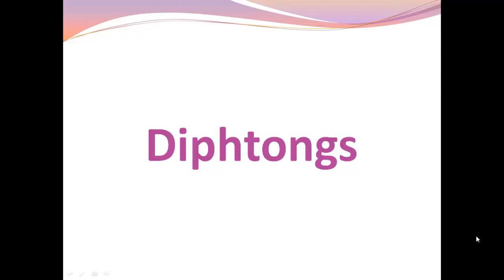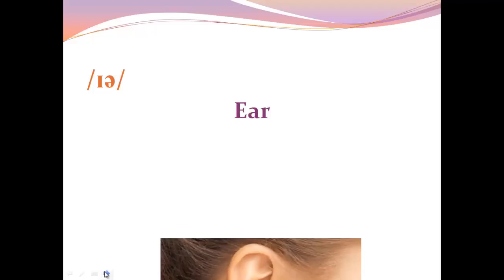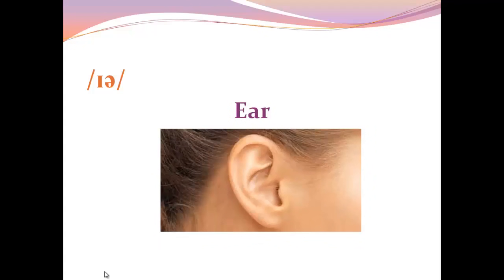Hi everyone and welcome to the last part of your lessons in phonetic symbols — diphthongs. So let's start with the first diphthong: Ear. I like the word Ear. American pronunciation: Ear. You just pronounce the R at the end.